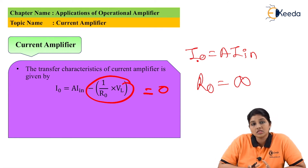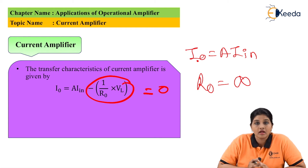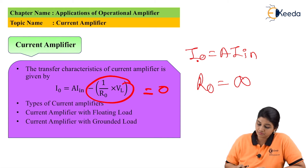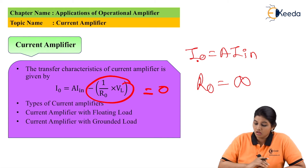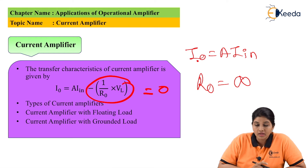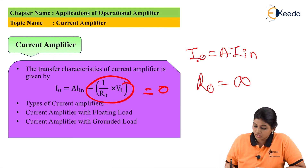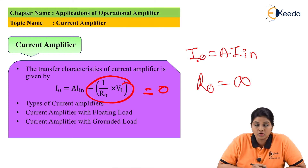Basically there are two types of current amplifier: current amplifier with floating load and current amplifier with grounded load. Now let's see each circuit one by one.